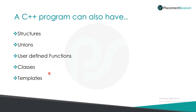Apart from this you can have some other parts in a C++ program like structures, unions, functions, classes and templates. These parts are present in a program to make the readability and the compilation process easier. We will be going through all these parts in our coming sessions.